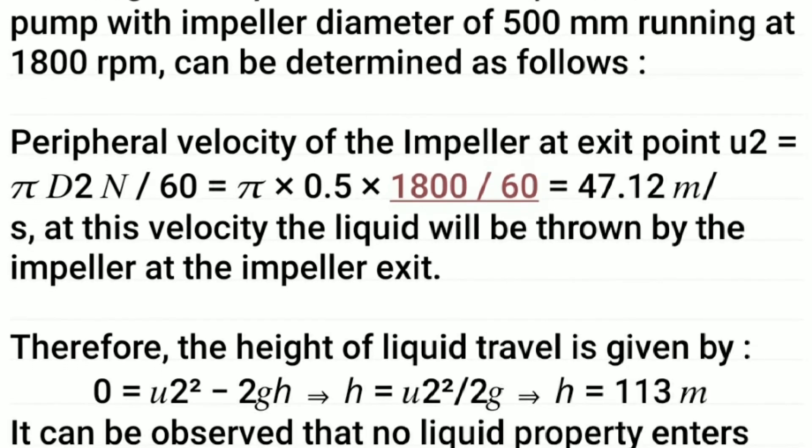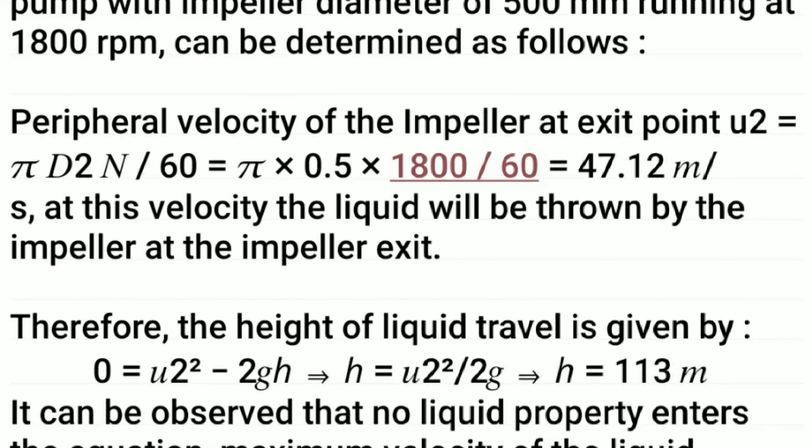Peripheral velocity of the impeller at exit point u2 equals π D2 N / 60, that means π × 0.5 meter × 1800 / 60, equals 47.12 meter per second. At this velocity, the liquid will be thrown by the impeller at the impeller exit.